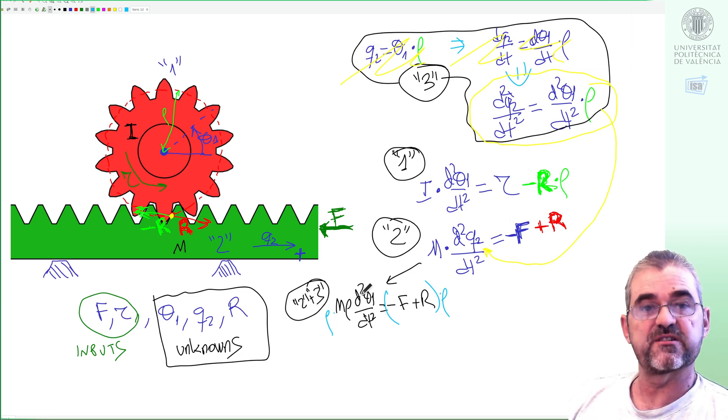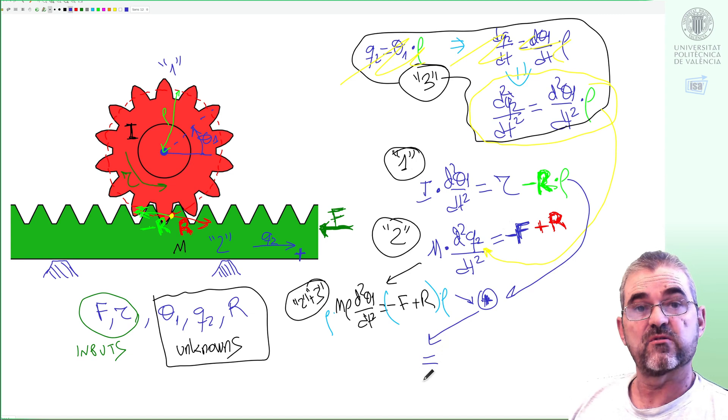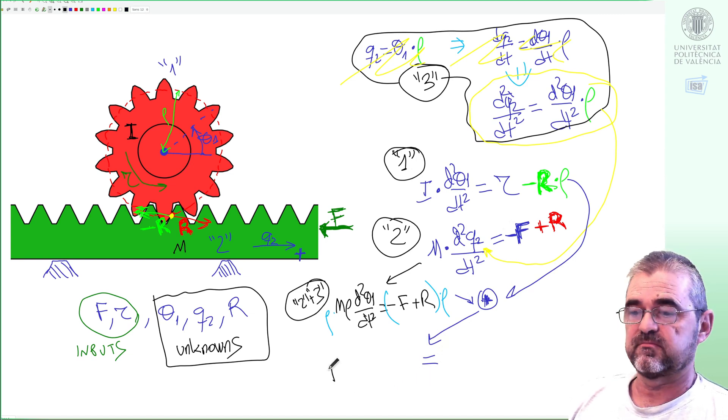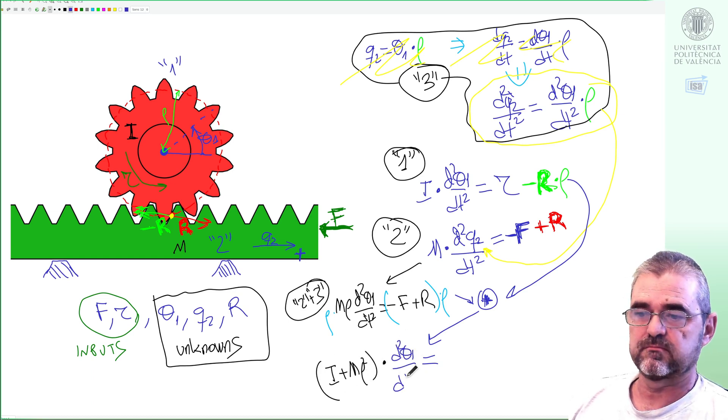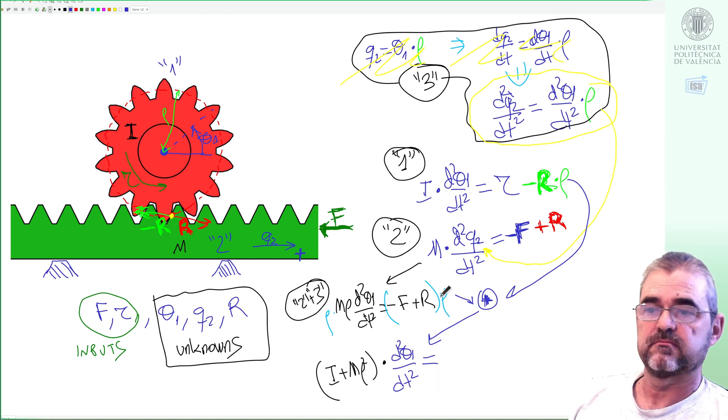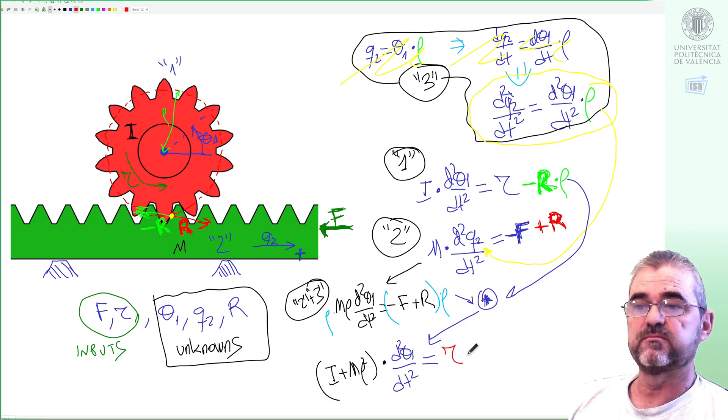If I sum equation one to equations two plus three, then summing right hand side and left hand side of the equations, I get moment of inertia plus m rho squared times acceleration equal to, R rho vanishes, and I get tau minus f rho.